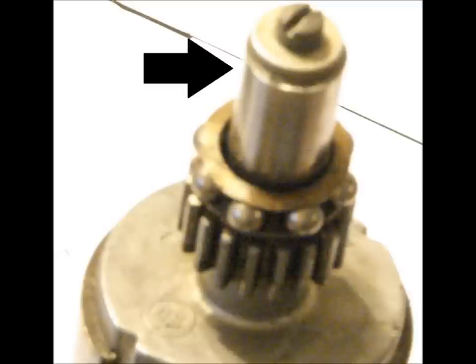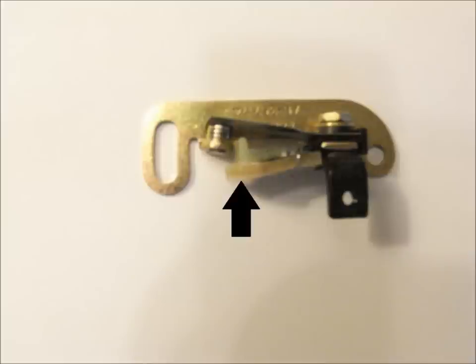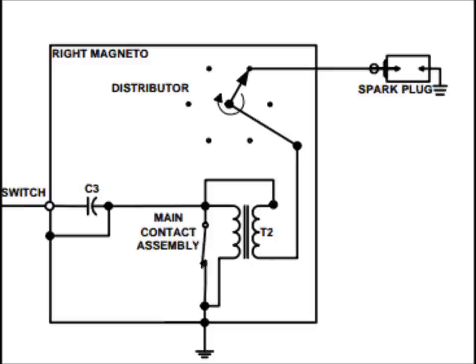The points are actuated by the cam, which is located at the end of the rotor. As the cam turns, the high spot pushes up against the cam follower, which in turn opens the points and disconnects the primary circuit's path to ground.